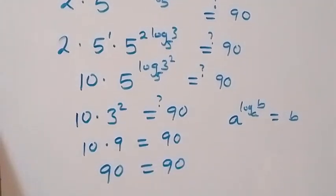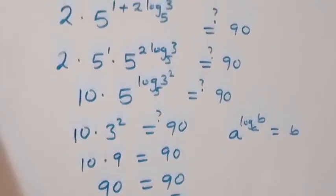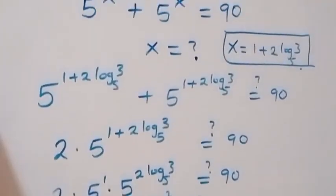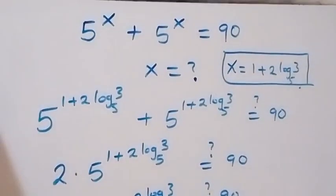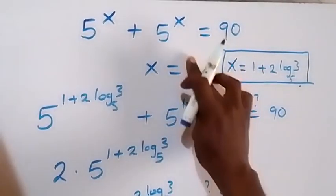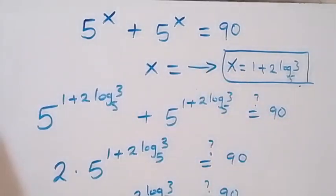The left hand side equals the right hand side. Hence the value of x, which is 1 plus 2 log base 5 of 3, satisfies the given problem. Thank you for watching — don't forget these steps.